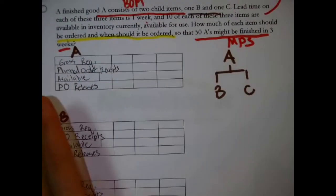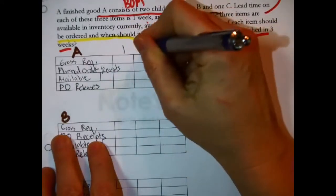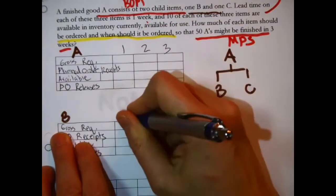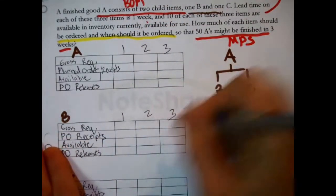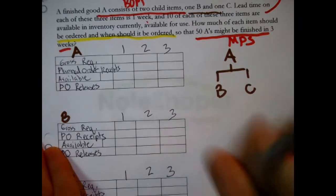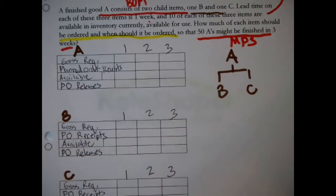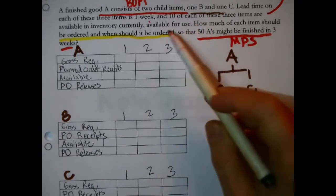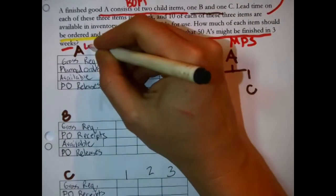Now, speaking of getting the records set up, there are three planning periods mentioned. Might as well label them. I'm just getting set up. And also, useful information about these items. The lead time on each is one week.